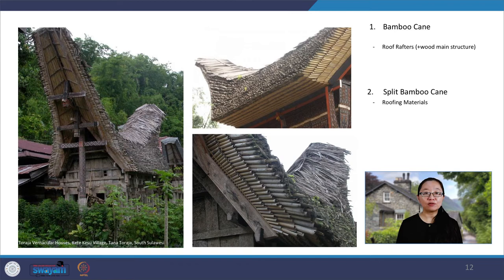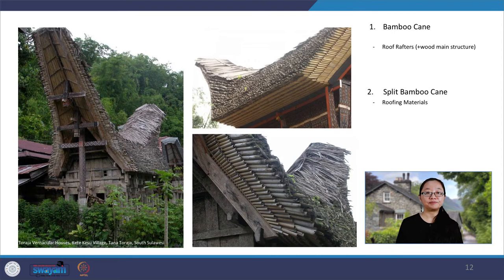Tongkonan is built on wooden piles and has saddleback roofs whose gables sweep up in an exaggerated pitch. The unique bamboo application is in the roof, constructed with layered bamboo canes cut or split in half, bound together with rattan, and assembled transversely in layers to keep rainwater from entering the house. The layers are put over an under-roof of bamboo poles tied longitudinally to the rafters. Sadly, nowadays the bamboo roofs are increasingly replaced by zinc roofs and nails.